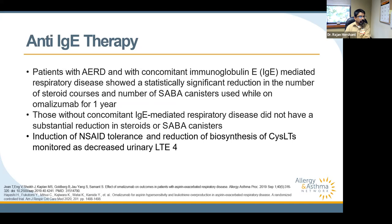A 2019 study on omalizumab in AERD patients showed a significant reduction in total steroid courses and short-acting beta-agonist use during the first year, though treatment was only beneficial if IgE or atopy was a factor — patients without significant atopy did not see the same benefit. A 2020 study showed omalizumab decreased urinary LTE4, reduced overall cysteinyl leukotriene production, and led to NSAID tolerance in patients on omalizumab.